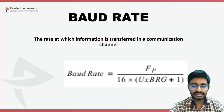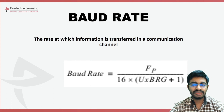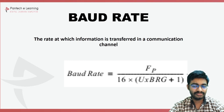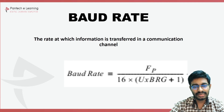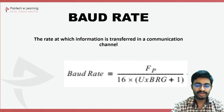The formula for baud rate is: fp divided by 16 into (UXBRG plus 1). UXBRG is the complete data taken from the frequency. Each and every application has its own frequency based on the crystal oscillator, and from that, the particular data is derived. Based on this formula, the baud rate is calculated.